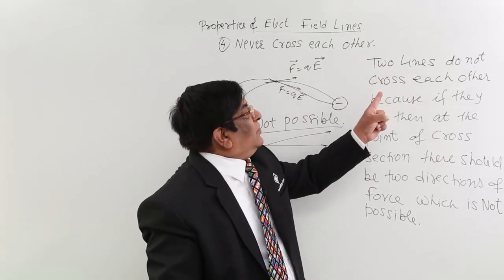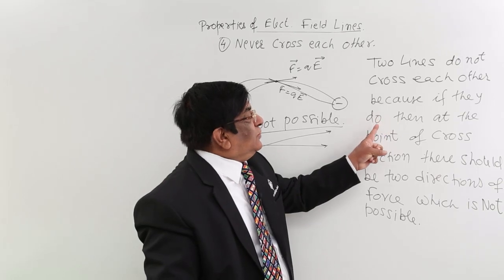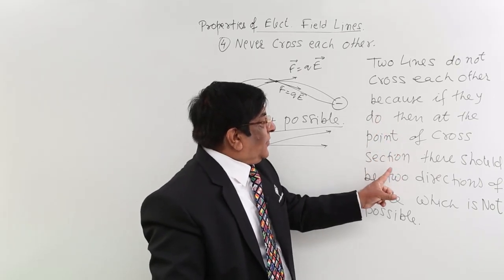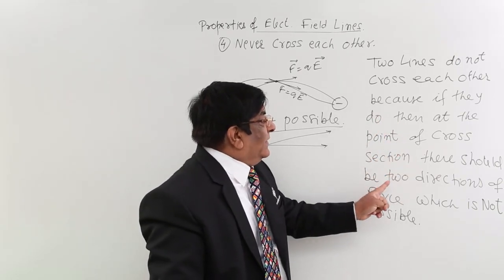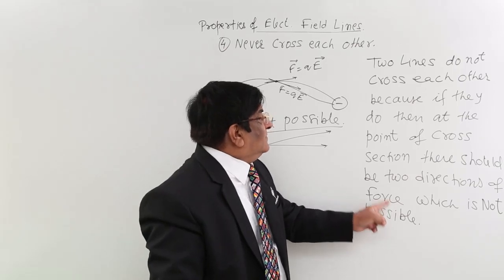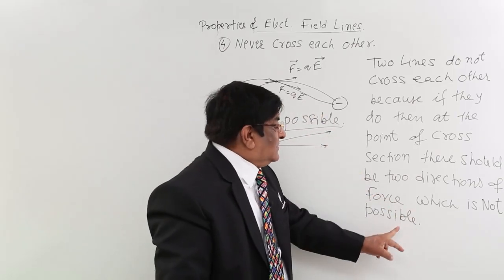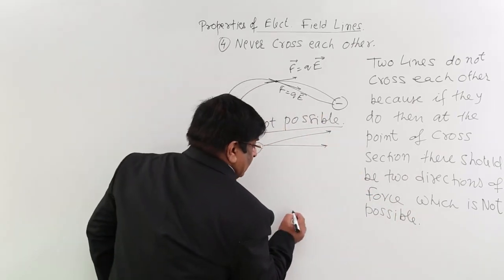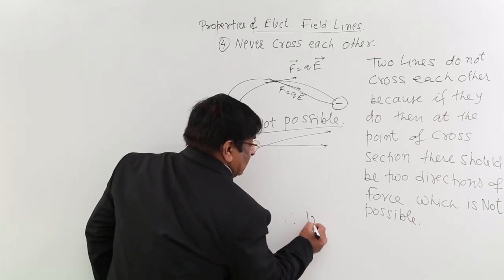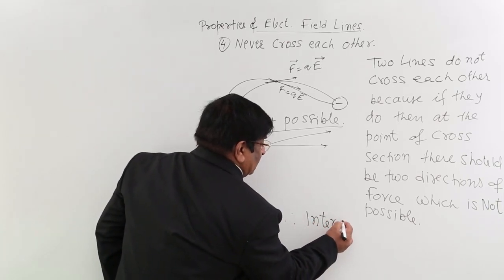Two lines do not cross each other because if they do, then at the point of cross section, there should be two directions of force along the tangent, which is not possible. Therefore, intersection of two lines is not possible.